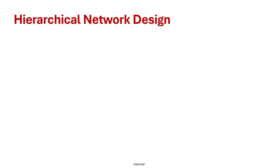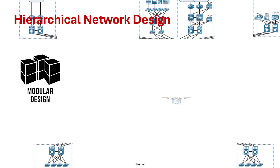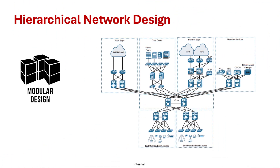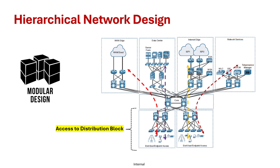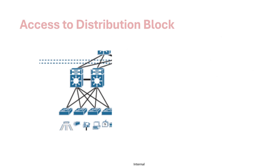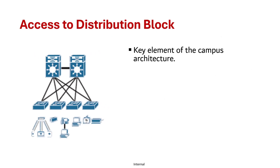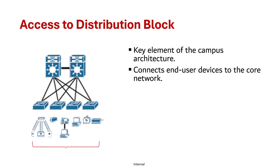One of the advantages of a hierarchical model is modularity. The modules are the building blocks that are assembled into the larger campus network. The campus network architecture is based on connections between blocks or modules connected together via the core of the network. The access distribution block, also referred to as the distribution block, is probably the key element of the enterprise campus architecture. It connects end user devices to the core network.